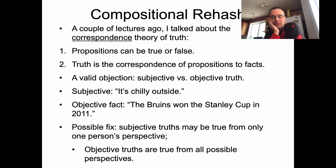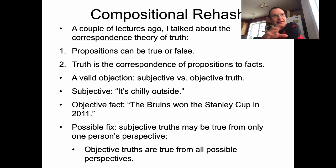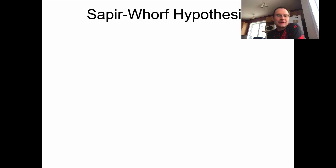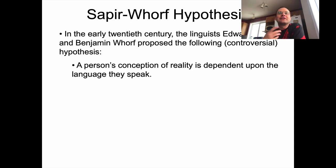You can think about it this way: subjective truths can be true but only from one person's perspective, whereas objective truths are true from all possible perspectives — from everybody's perspective. So there's a difference between objectivity and subjectivity, which I'm trying to lead into the Sapir-Whorf hypothesis with.